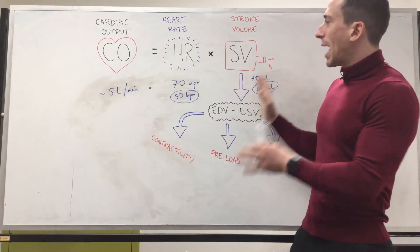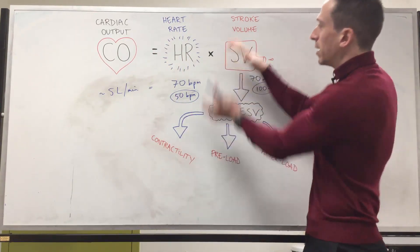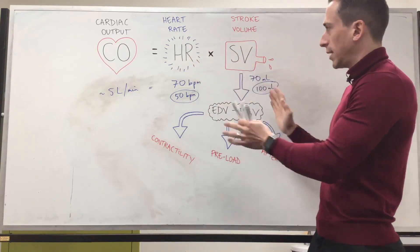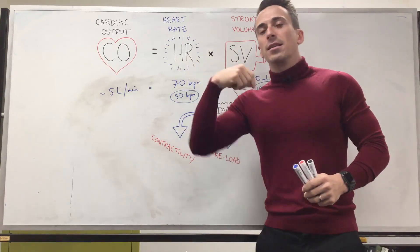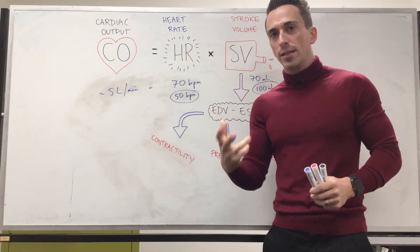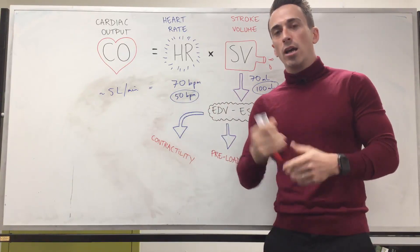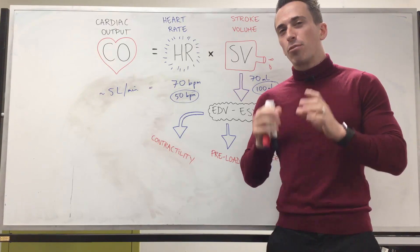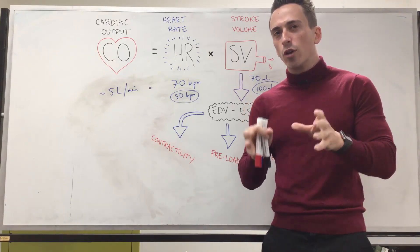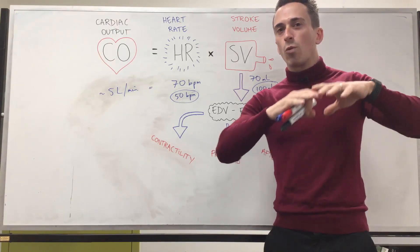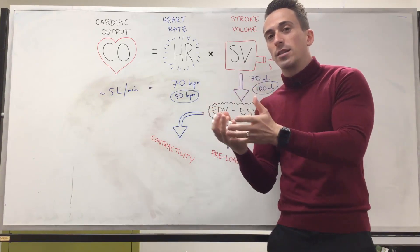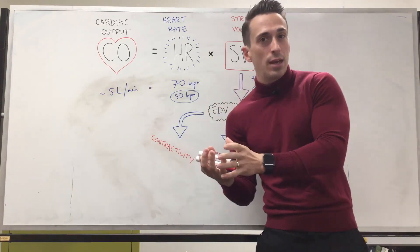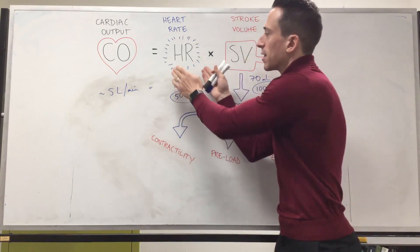Looking at the factors that contribute to heart rate and stroke volume: heart rate — how many beats per minute — is influenced by certain hormones in the body and innervation. Predominantly we're talking about the autonomic nervous system: the rest-and-digest and fight-or-flight systems, also known as the parasympathetic and sympathetic nervous system. They can affect the heart rate.